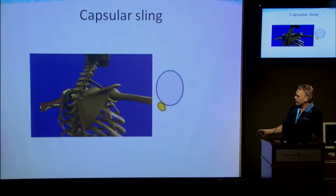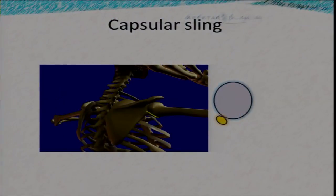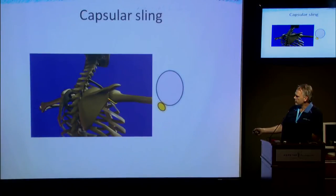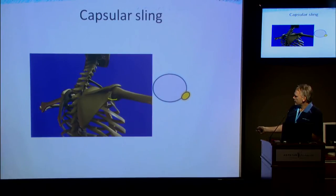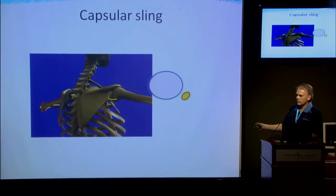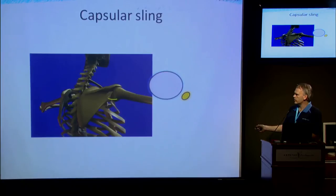The thought here is that during extremes of abduction and external rotation, if there's an aberrantly thickened and tightened posterior inferior capsule, then as you abduct and externally rotate, this tight thickened capsule leads to a postero-superior translation of the head of the humerus. This helps explain why we see the pathology where we do — posterior superior undersurface cuff tears — while we don't see anterior instability in high-level throwers.